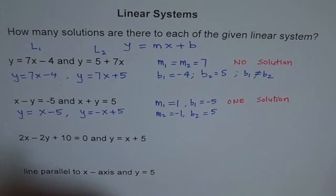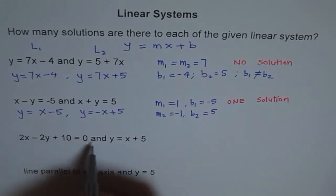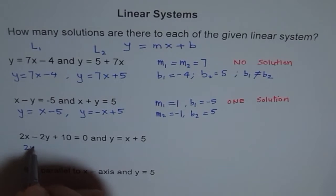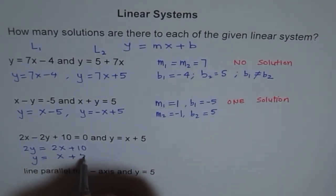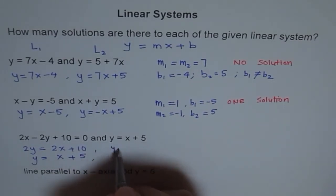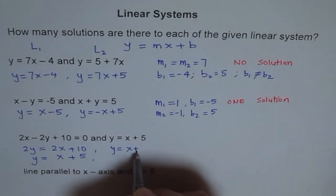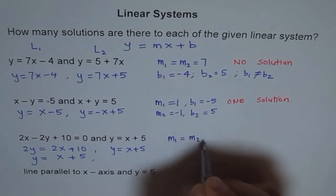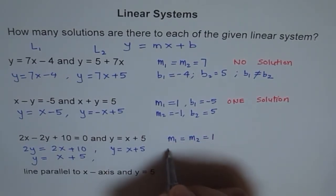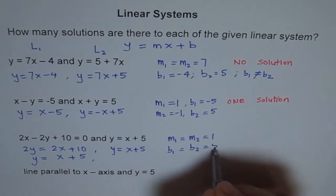In the next one, we will again isolate this. So once we isolate this, we get y, let me write first 2y equals to 2x plus 10 and then y is equals to, we will divide by 2 and get x plus 5 and here y is given as x plus 5. Do you notice? Slopes and y-intercepts are same. So we have m1 equals to m2 equals to 1. How about y-intercept? b1 is equals to b2 and is equals to 5.